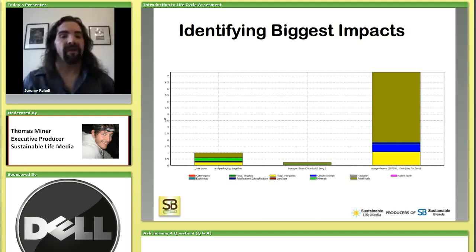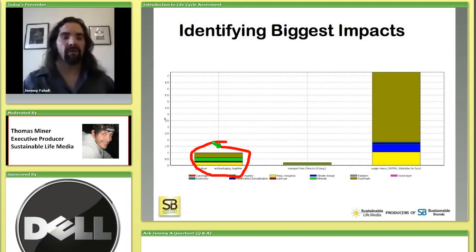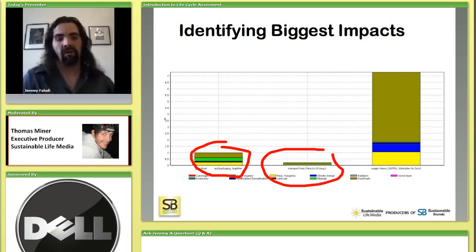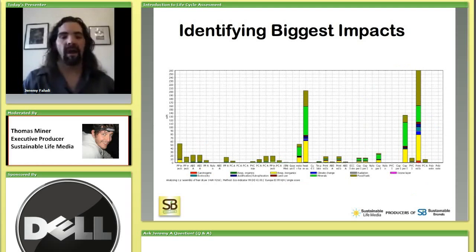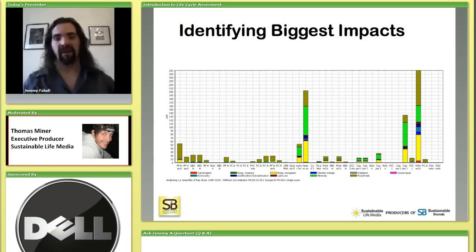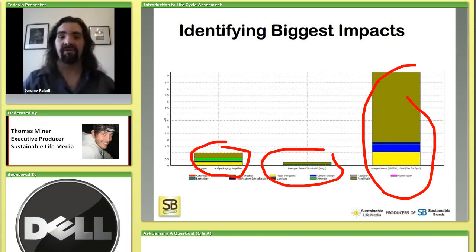This is that same hair dryer, but now all the manufacturing bars from the previous screen are wrapped up into one bar. Then there's transportation — from China to an average home in the US — and then there's the electricity used during the life of the hair dryer. If you're looking at the biggest impacts and top priorities for redesign, you might think it was manufacturing or transportation, but in fact both of those are irrelevant compared to the electricity used during the product's life. That would really be the top priority.